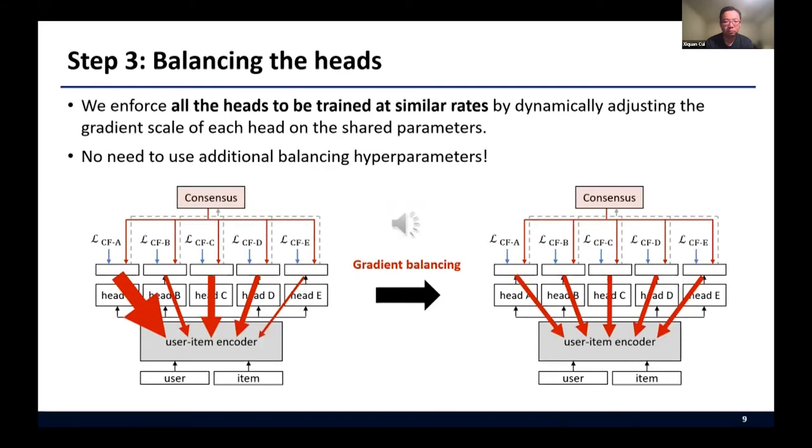The last step is balancing the heads. The heterogeneous objectives have different convergence behaviors. If a few heads are too dominant during the training, the model parameters would be biased in favor of the heads, which incurs imbalances that impedes the remaining heads from being fully optimized. And this degrades the overall effectiveness of the framework. To solve this problem, we enforce all the heads to be trained at similar rates by dynamically adjusting the gradient scale of each head on the model parameters. Through this process, we can achieve a good balance among the heads without using additional balancing hyperparameters.